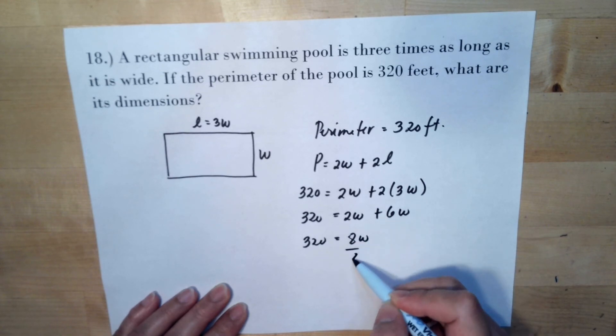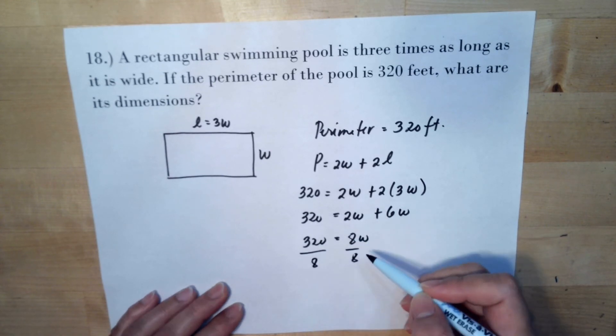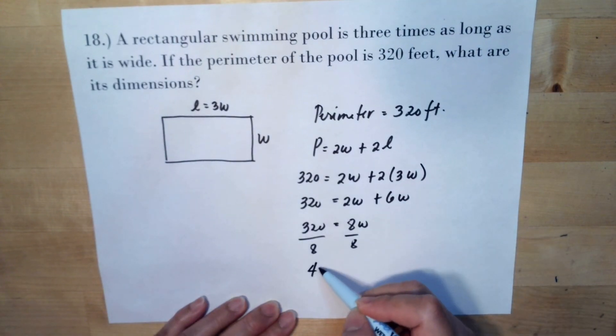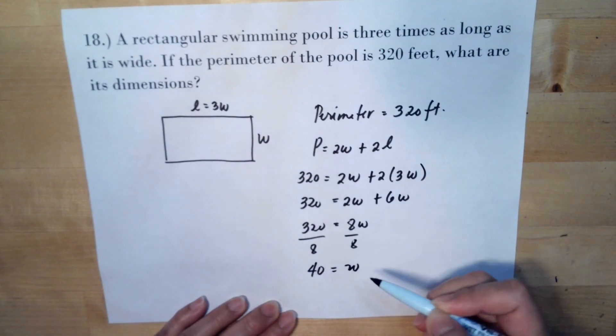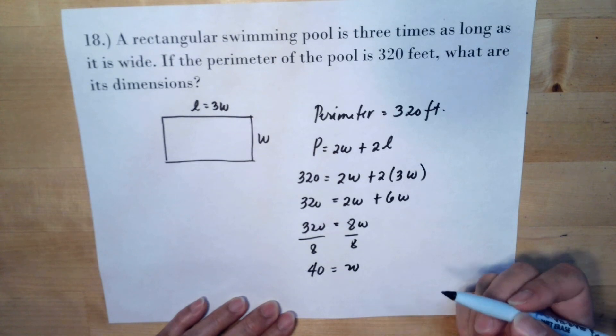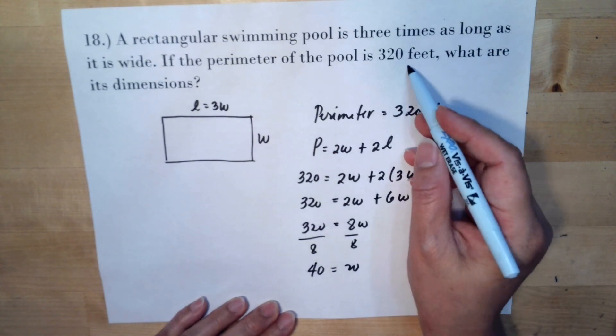Divide 8 both sides. So 320 divided by 8 is 40 for our width. And the unit is feet.